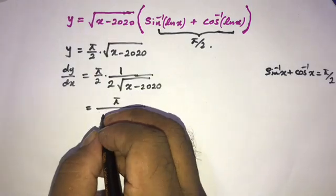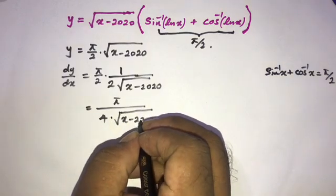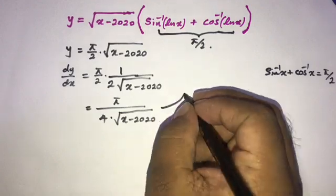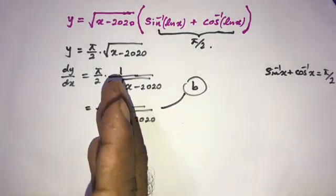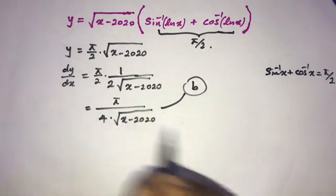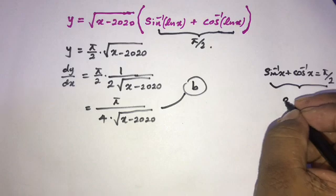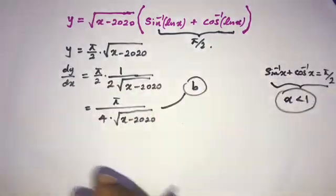so 4 times the square root of x minus 2020. So according to this the answer is B, but is this correct? Okay, here this function is defined under this condition and most of the students solve this question like this